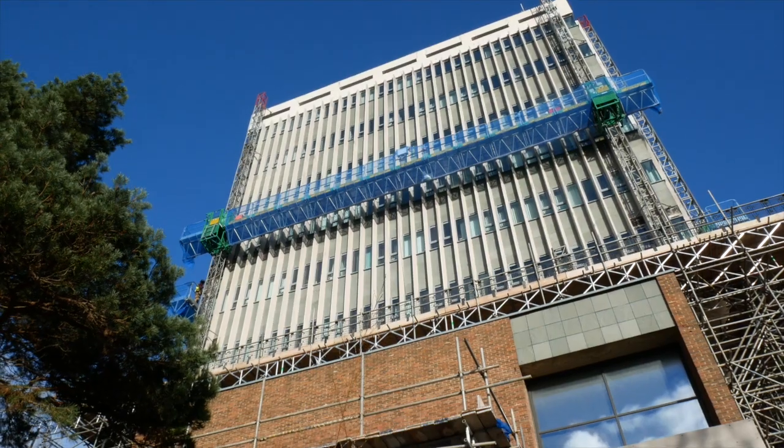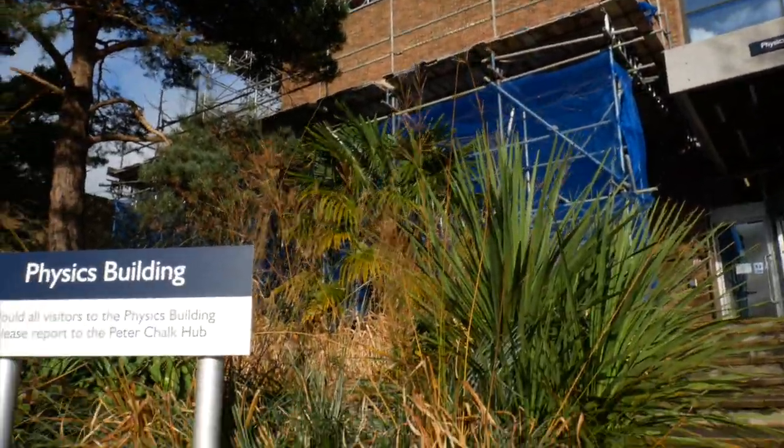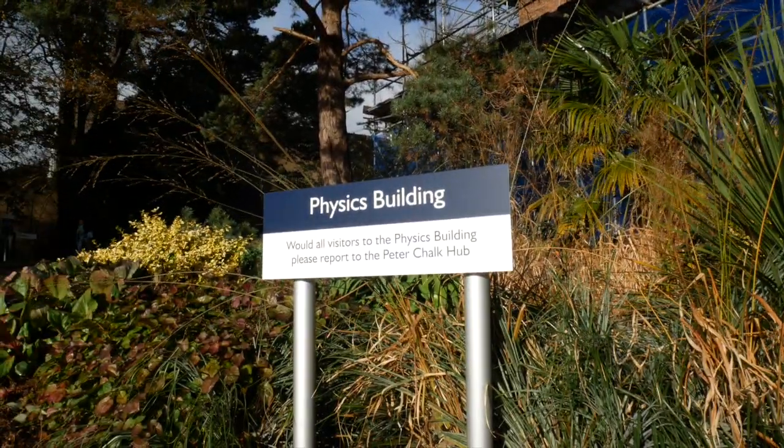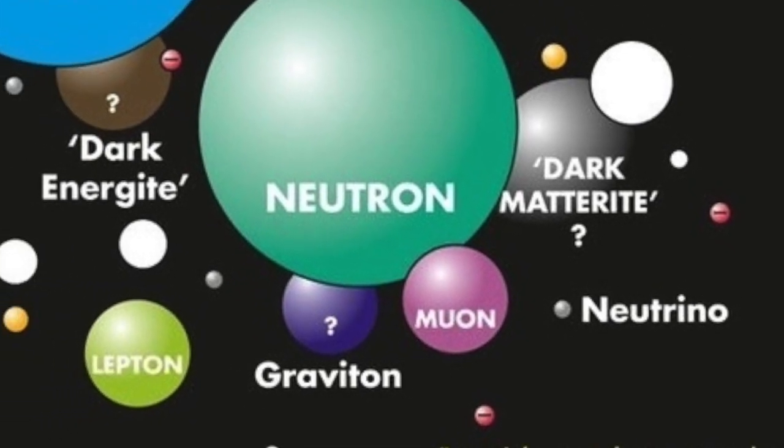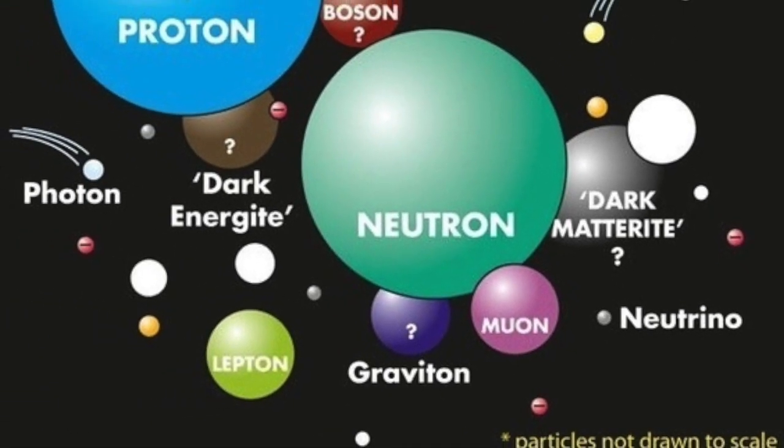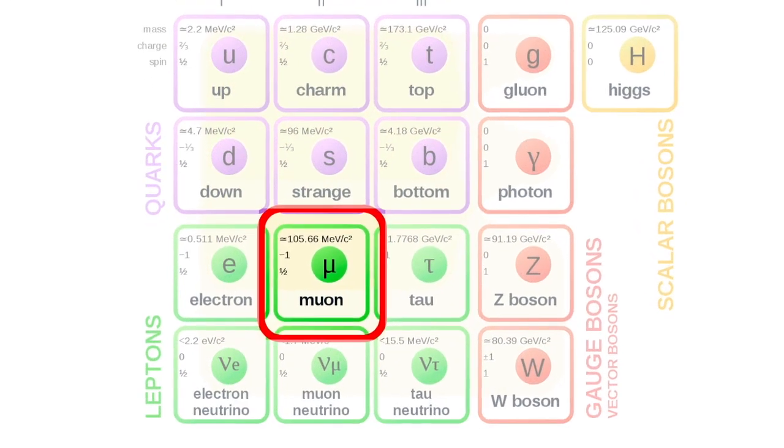We are a team of natural sciences students at the University of Exeter, and we are hunting muons. Muons are subatomic particles that belong to the same family as electrons and positrons, but are 200 times heavier.